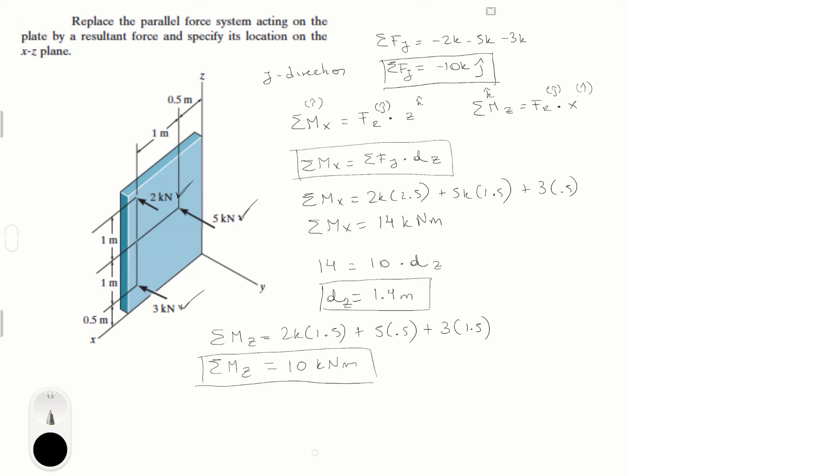And now you apply this into the formula that says sum of the moments in the z is equal to sum of the forces in the y direction times that distance. So 10 is equal to 10 times the distance x. So you get that dx is equal to 1 meter.